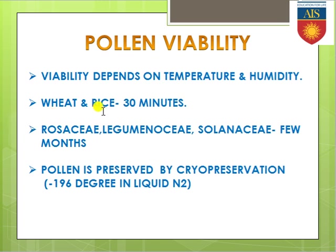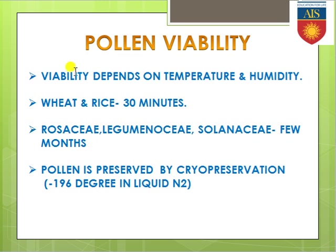Some examples: in wheat and rice (cereals), pollen viability is present for about 30 minutes. In rosaceae, leguminosae, and solanaceae plants, pollen remains viable for a few months. Pollen can also be preserved in liquid nitrogen at minus 196 degrees Celsius — this is commonly known as cryopreservation. Pollen can be cryopreserved to maintain viability; even though frozen, they cannot be inactivated and remain active after many years.